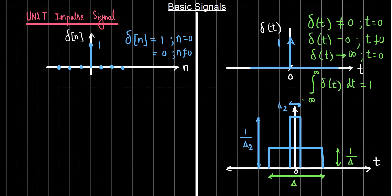If we make delta, the width, tend to zero while retaining the area as one, the height would increase. As delta tends to zero, at a certain point the pulse will grow infinitely and result in a signal that can be thought of as an approximation to the impulse signal. So the impulse function can be thought of as this pulse where delta is tending to zero.